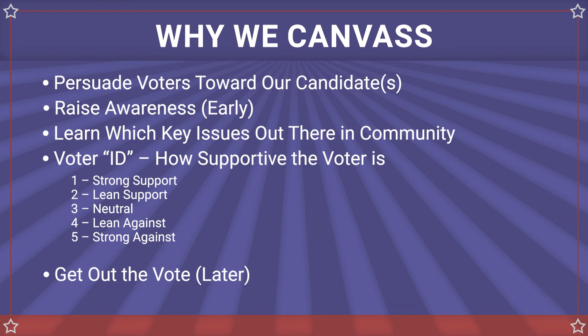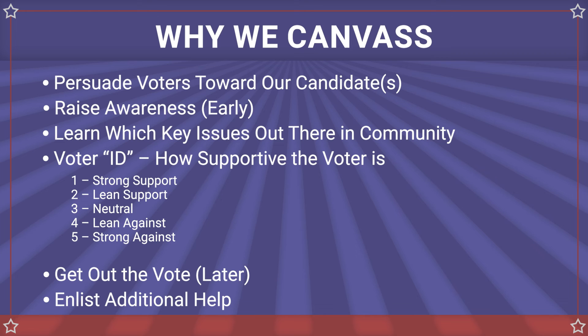Later in the cycle, canvassing helps to get out the vote. This means that we can go back to our supporters and make sure that they follow through to vote for our candidate. Finally, we can enlist supporters' help in other ways. They might volunteer, take a yard sign, or spread the word about our candidate to their friends and neighbors.